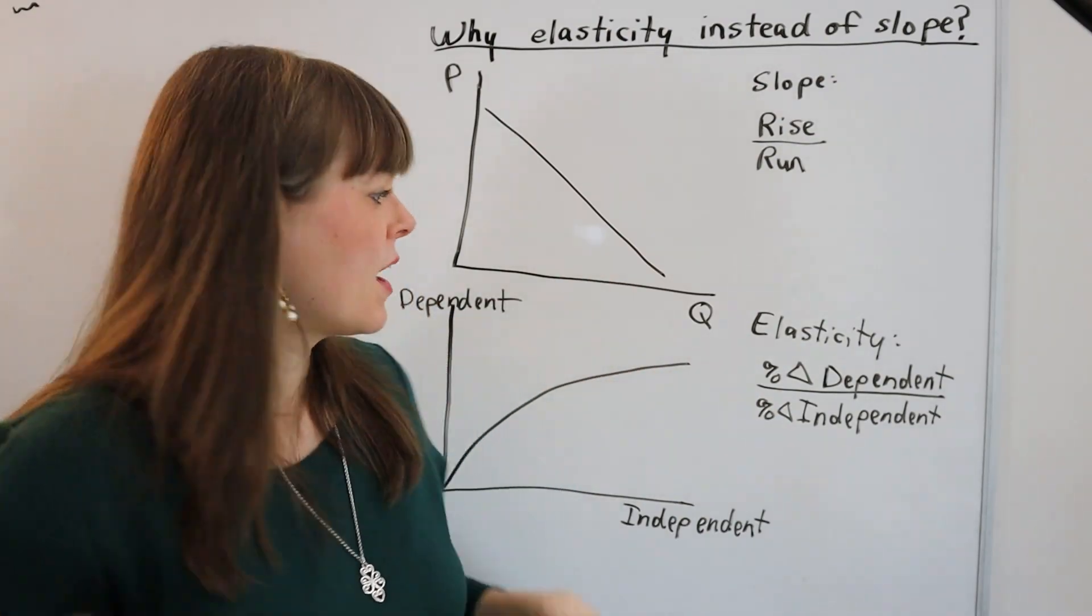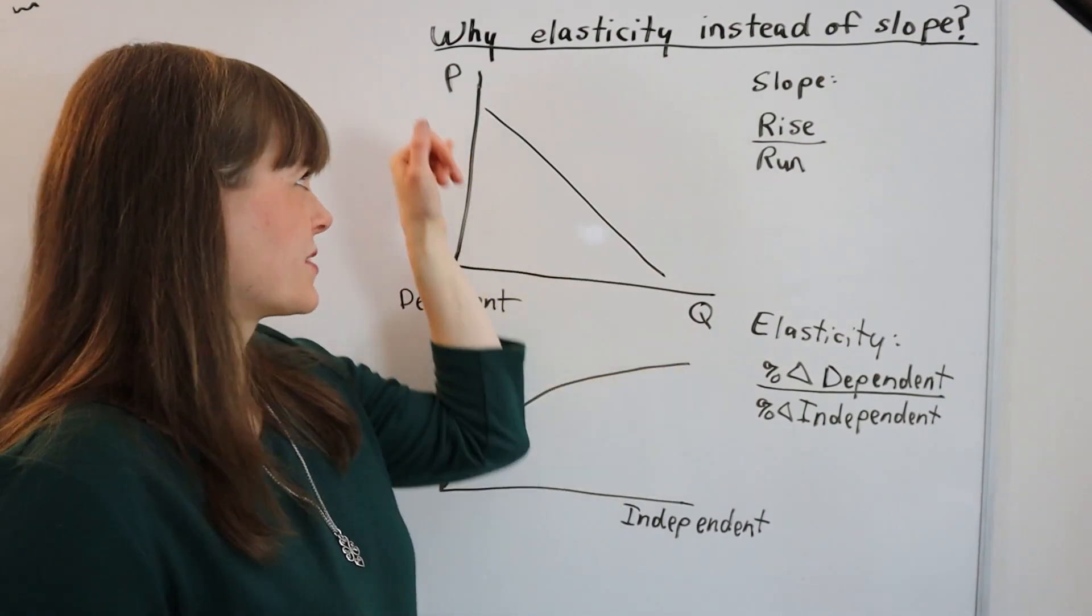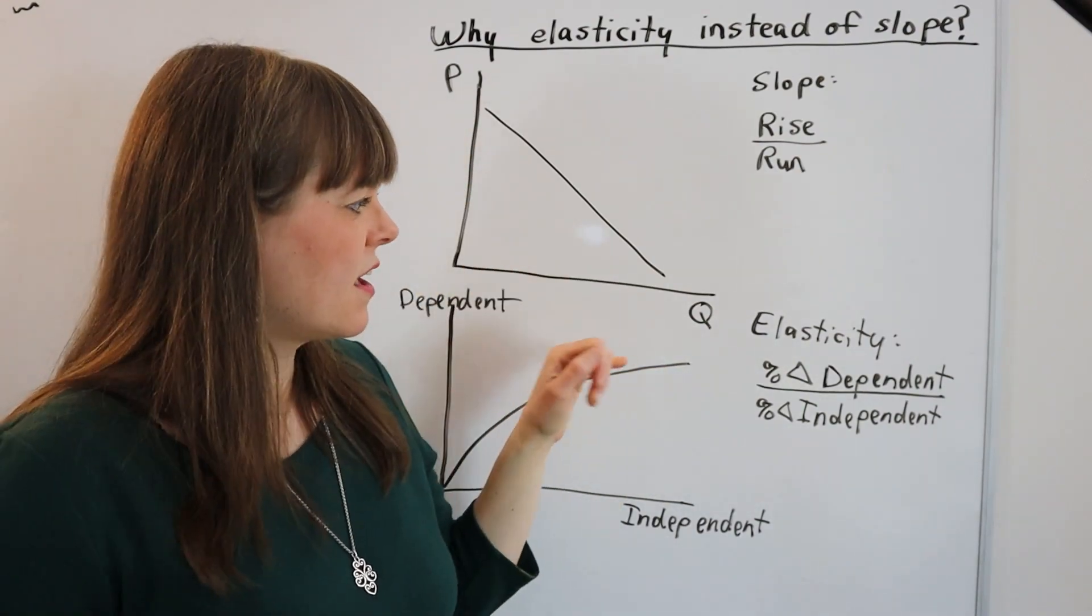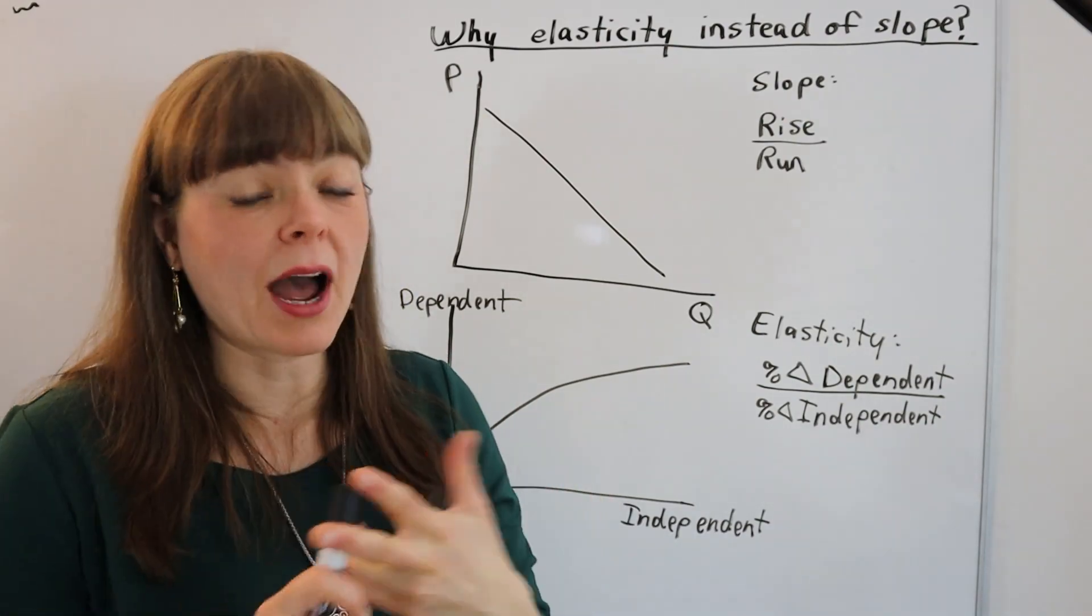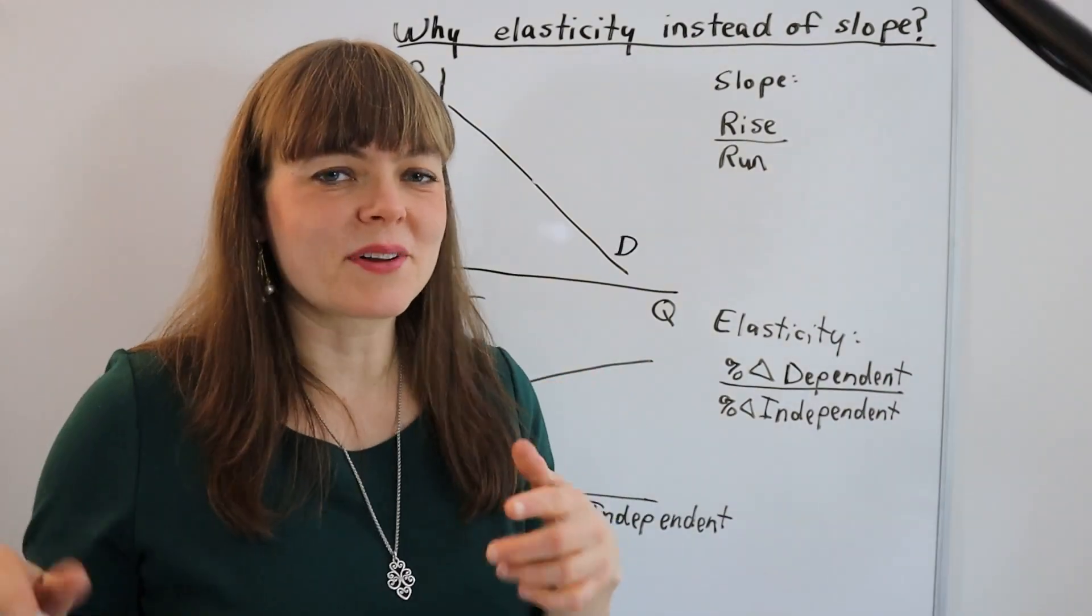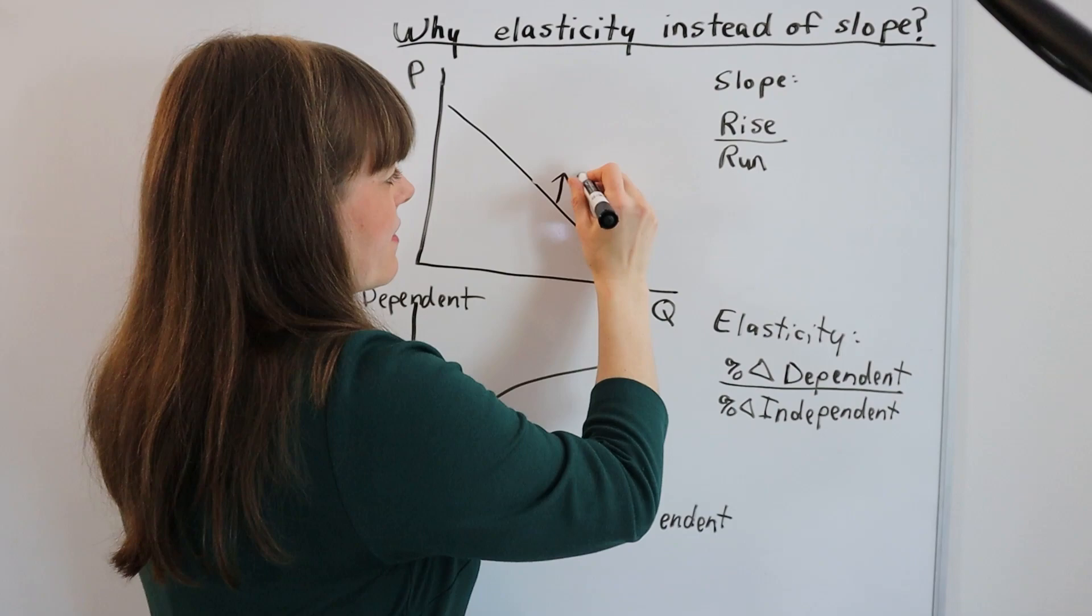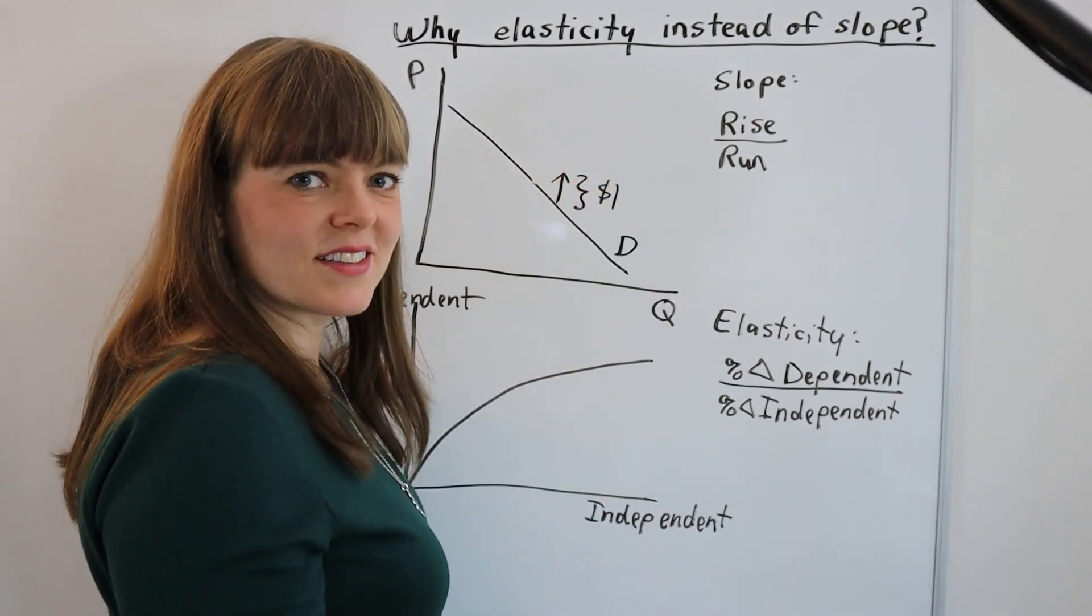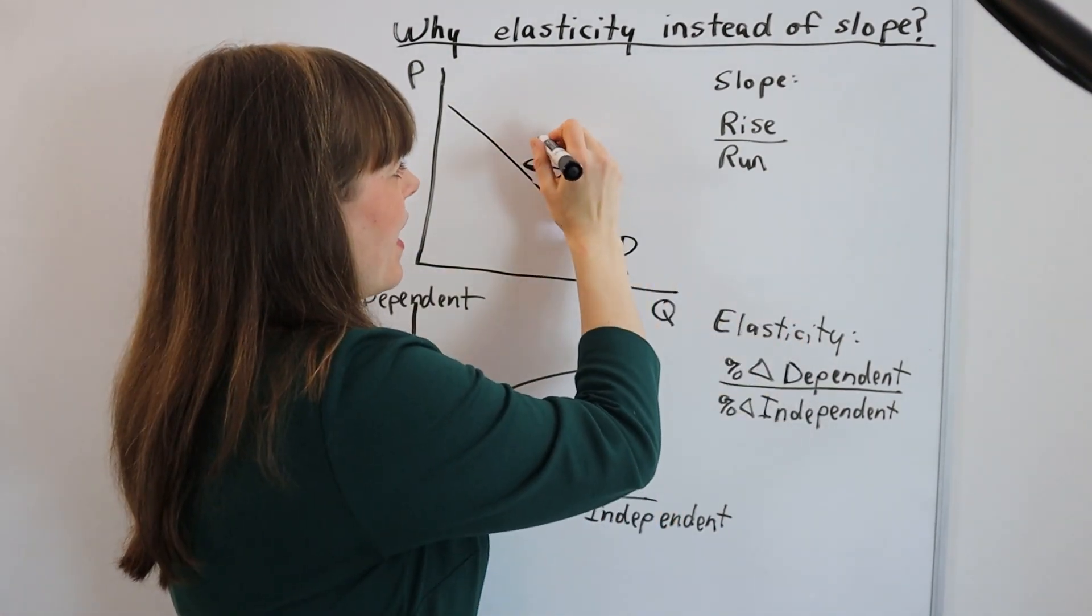For example, if you're measuring the quantity of cheese that people consume in response to the price of cheese, you could measure cheese in ounces, you could measure it in pounds, you could measure it in grams. So for example, let's look at a case where we have a $1 increase in the price of cheese, and that leads to a one pound decrease in the amount of cheese that people actually buy.